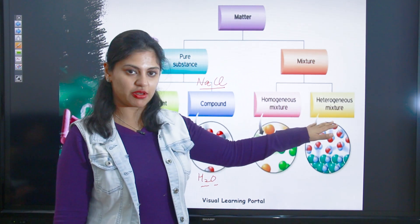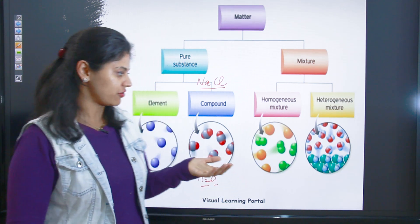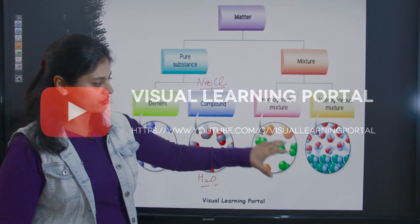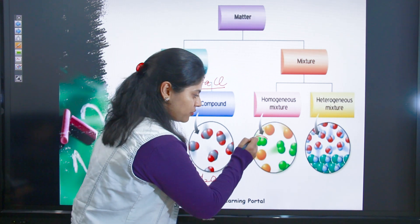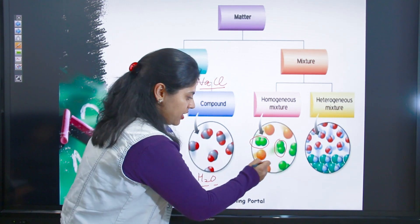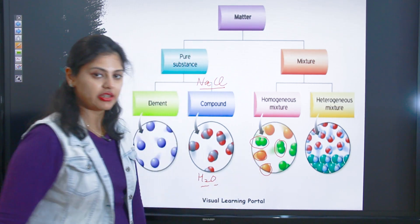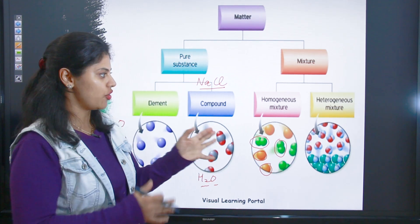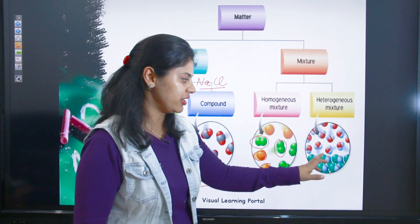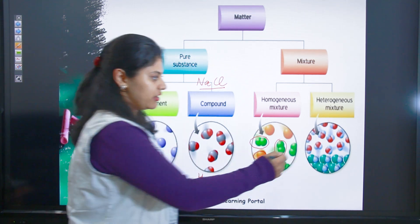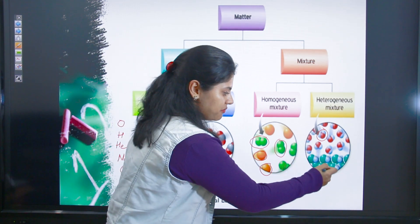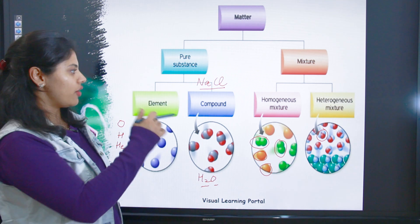Mixtures are divided into two categories: homogeneous mixtures and heterogeneous mixtures. Homogeneous mixtures mein same kind of compounds aapas mein jude hote hain — same elements jo same tarah ke aapas mein jab jude jaate hain, they form a homogeneous mixture. In heterogeneous mixtures, different compounds combine together — ek ke saath do jude hote hain — so it is a mixture of all different kinds of compounds.